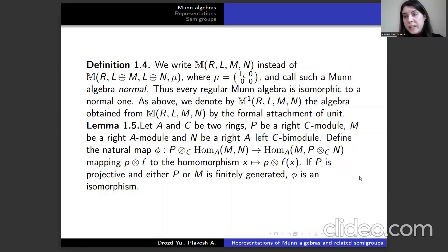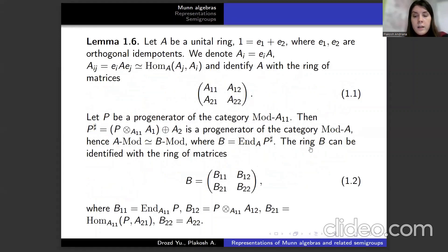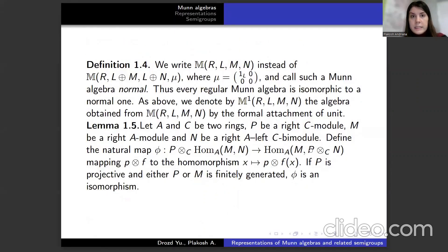As above, we denote by M¹ the algebra obtained from M by the formal attachment of unit. Let us formulate a lemma. Let A and C be two rings, P be a right C-module, M be a right A-module, and N be a left C-module. Define the natural map φ mapping P⊗F to the homomorphism. If P is projective and either P or M is finitely generated, φ is an isomorphism.